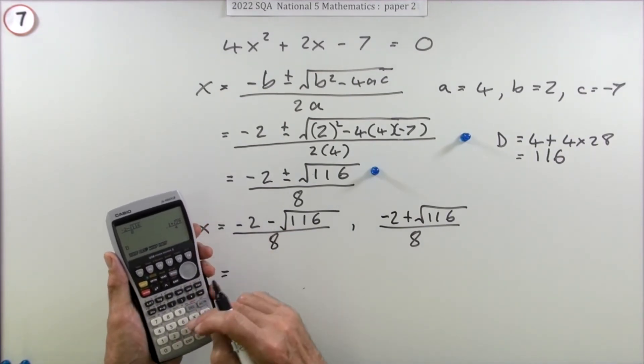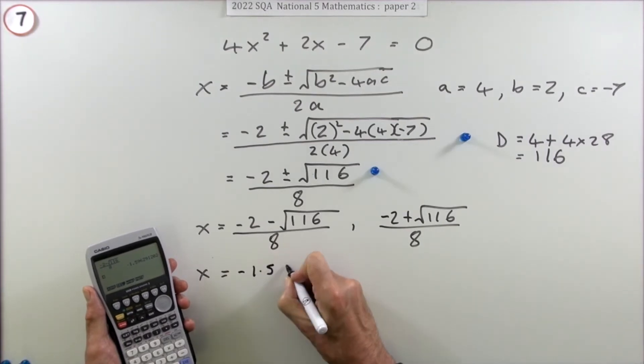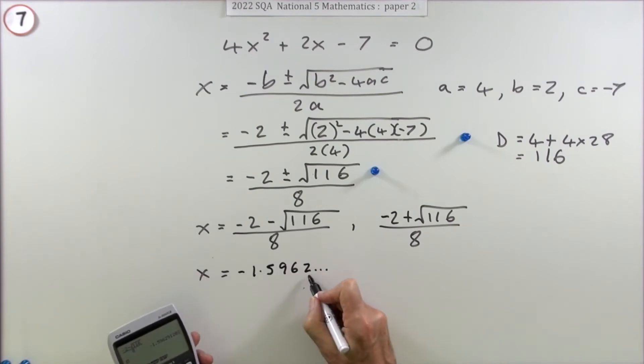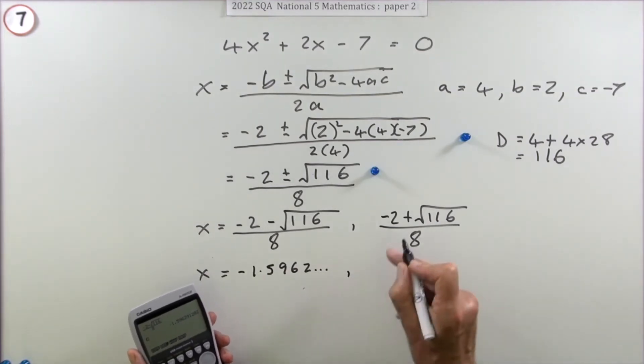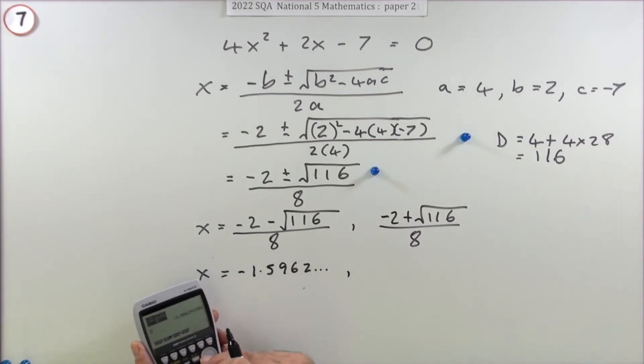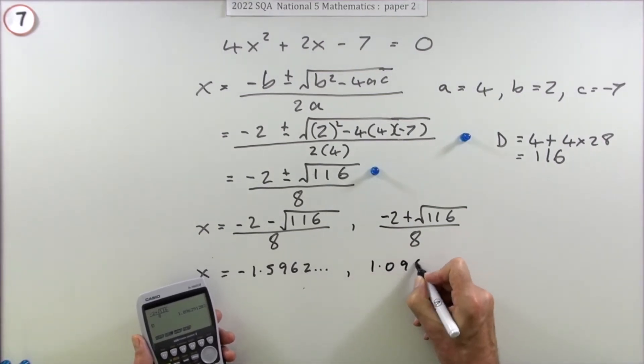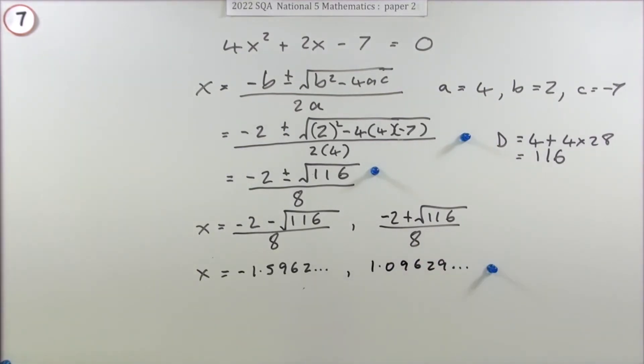Working out the first one, change it to a decimal—you're not looking for exact values. That's -1.5962 and so on. That's not rounded off properly, that's just what was on the calculator. Then use this one: go back up to the original calculation and change that top sign into a plus. That gives you 1.0962 and so on. Doing that gets a mark for pressing the buttons. Finally, round them off to two significant figures: that's -1.6 (the 9 rounds the 5 up), and 1.1 (the 9 makes the 0 into a 1) for the final mark.